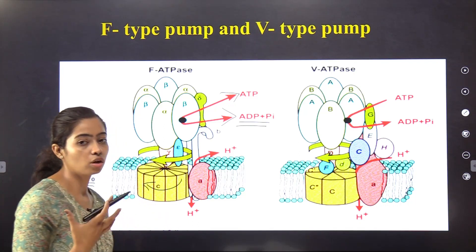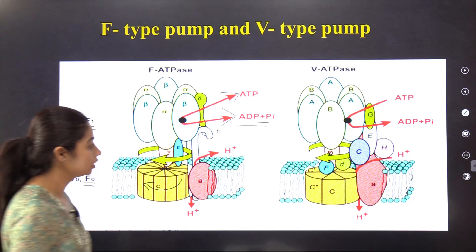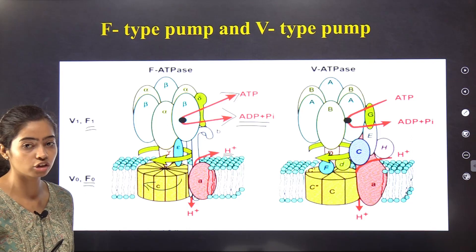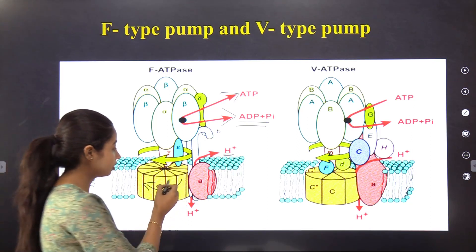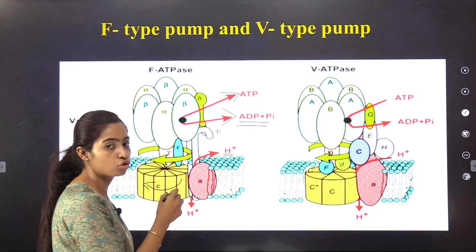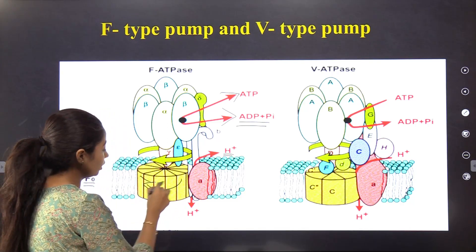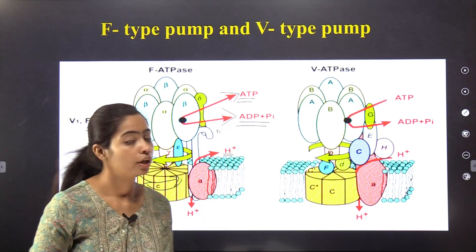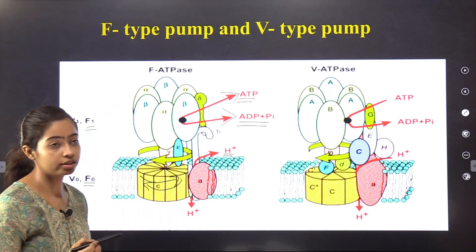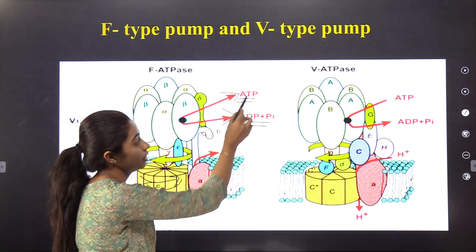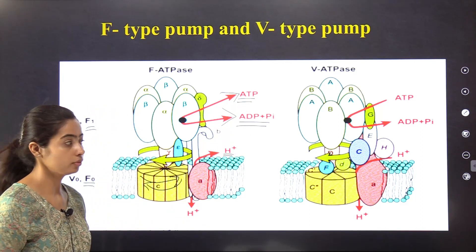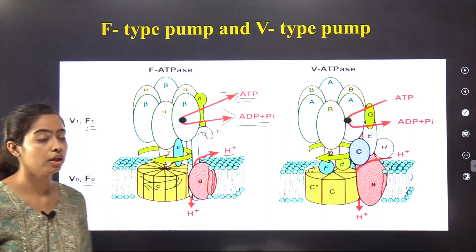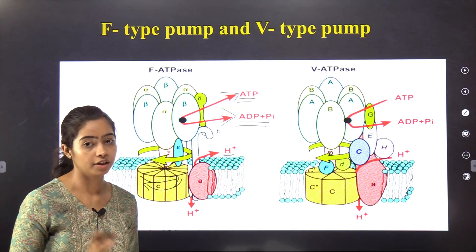If the concentration of H+ ions increases beyond a threshold, the F0 particle will rotate in the reverse direction and there will be synthesis of ATP. It rotates in reverse direction and therefore ATP formation occurs. That is the key point for the F-type ATPase.